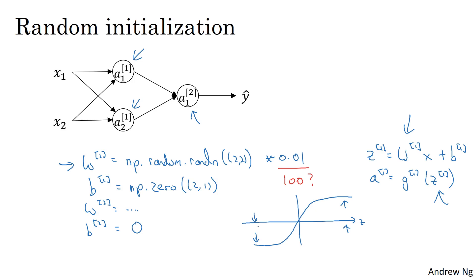So just to recap, if w is too large, you're more likely to end up even at the very start of training with very large values of z, which causes your tanh or sigmoid activation function to be saturated, thus slowing down learning. If you don't have any sigmoid or tanh activation functions throughout your neural network, this is less of an issue, but if you're doing binary classification and your output unit is a sigmoid function, then you just don't want the initial parameters to be too large. So that's why multiplying by 0.01 would be something reasonable to try, or any other small number.